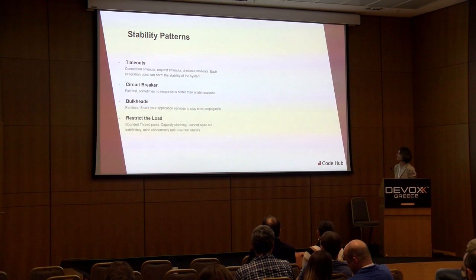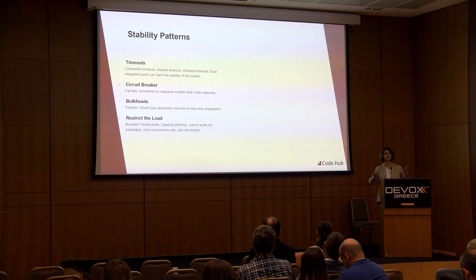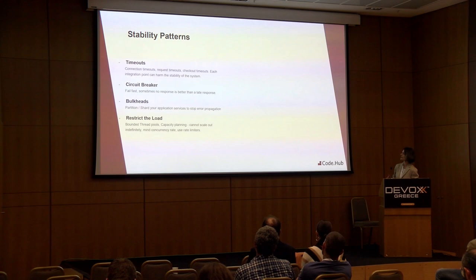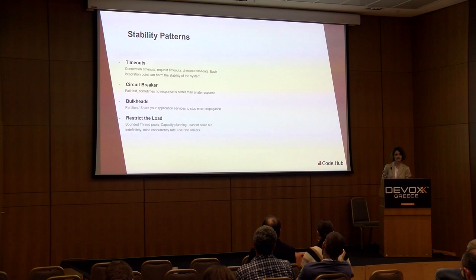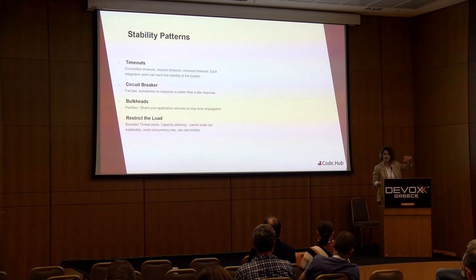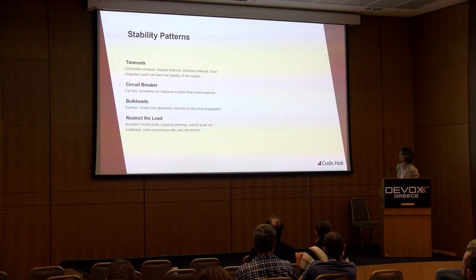Let's see the patterns we use for stability. Timeouts: we love integration points because we don't do business on our own, but integration points can harm our stability because we keep resources waiting without doing actual business. Connection timeouts, request timeouts, and even checkout timeouts when checking out a thread from the thread pool should all be established. Circuit Breaker: this pattern stops the propagation of failure to other systems. You make consecutive calls to the outbound system; if you don't get a response, you open the circuit and isolate the failing component. The response is impacted, but you stop the failure propagating to your callers. Most of the time it's better to fail fast and stop rather than wait.